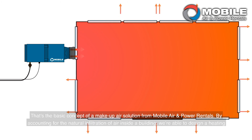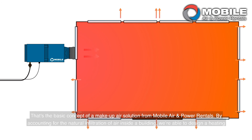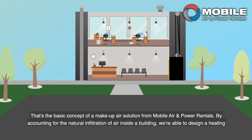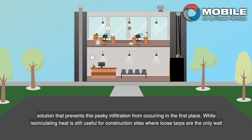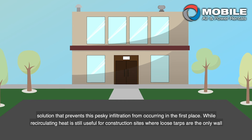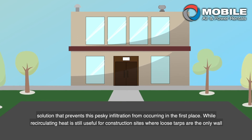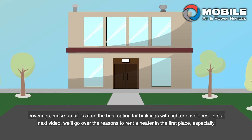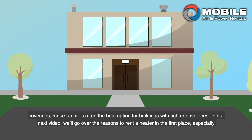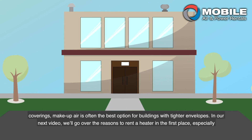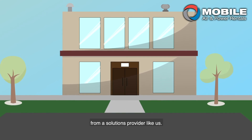That's the basic concept of a make-up air solution for Mobile Air and Power Rentals. By accounting for the natural infiltration of air inside a building, we're able to design a heating solution that prevents this pesky infiltration from occurring in the first place. While recirculating heat is still useful for construction sites where loose tarps are the only wall coverings, make-up air is often the best option for buildings with tighter envelopes. In our next video, we'll go over the reasons to rent a heater in the first place, especially from a solutions provider like us.